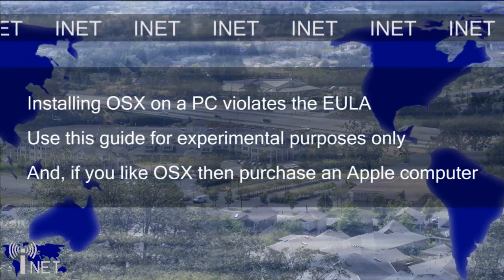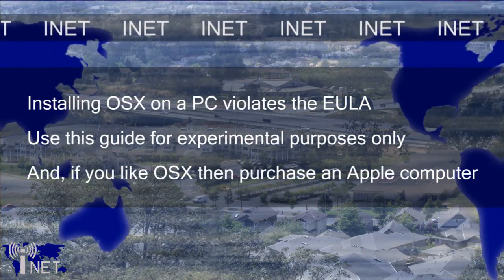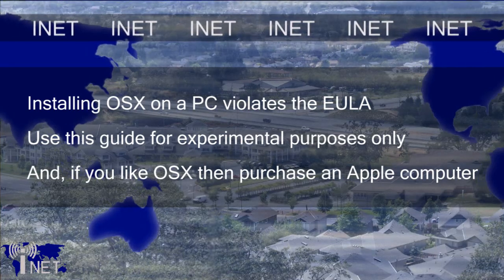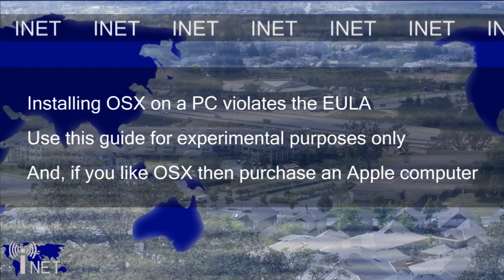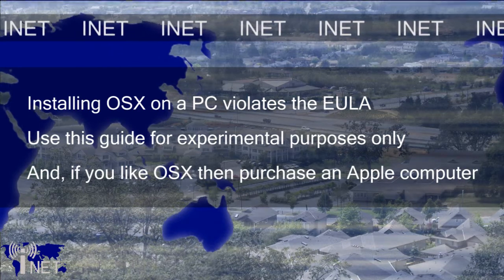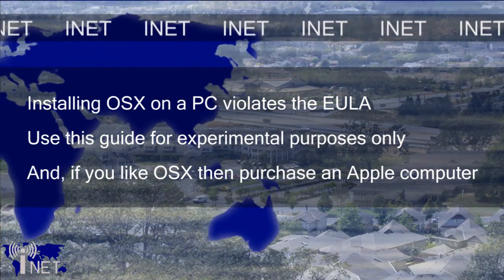If you've ever wanted to run the Macintosh operating system without actually forking out the big bucks for a Mac computer, then this is the video for you. A lot has changed in the two years since I released my first video on how to install OSX on a PC. In this updated video I'll show you how I went about installing 10.5 Leopard onto my HP TM2 tablet computer. This guide is meant for experimental purposes only. If you really wish to use the Macintosh operating system, buy a Mac and don't violate the software licensing agreement. iNet does not condone software piracy.